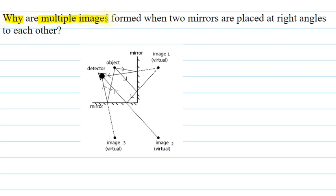The question says, why are multiple images formed when two mirrors are placed at right angles to each other?